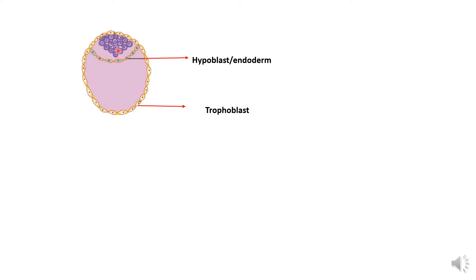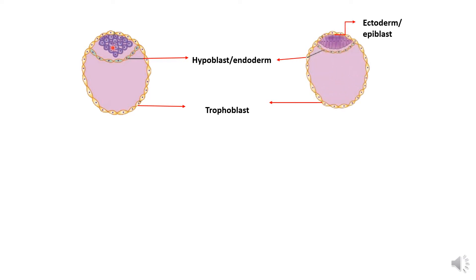How do they get differentiated? They become more flattened. They become flattened and lie free — that is, they are not attached on top or on the bottom — and that forms the endoderm. The rest of the cells of the embryoblast or inner cell mass become more columnar, and that forms the ectoderm or the epiblast.